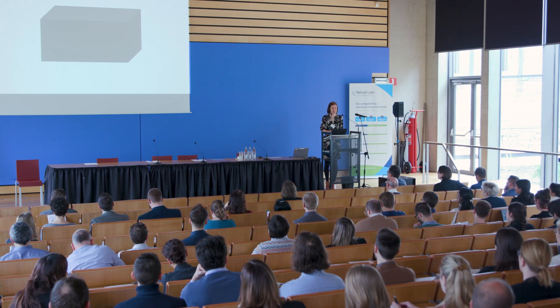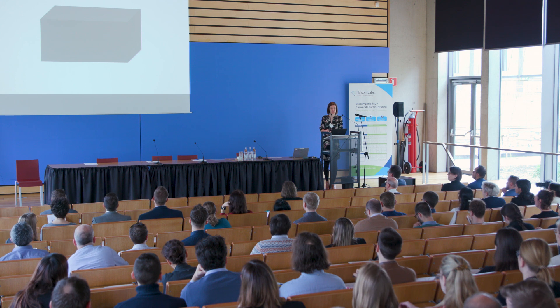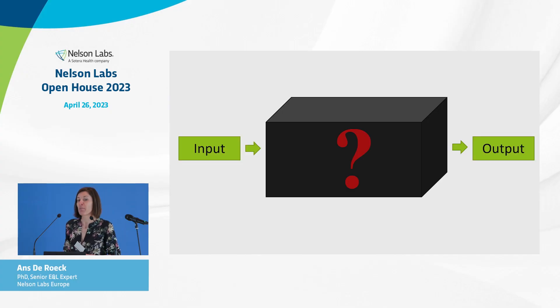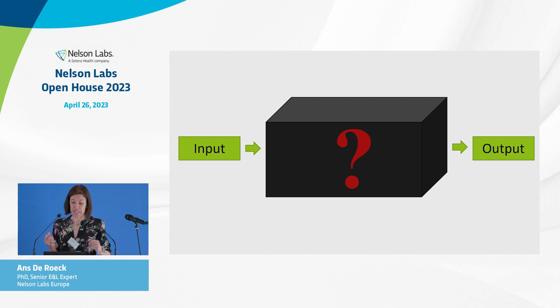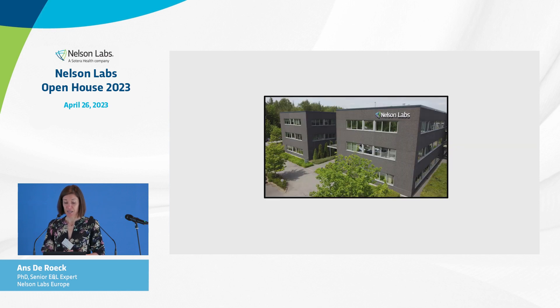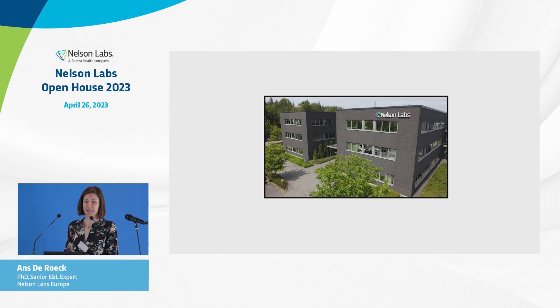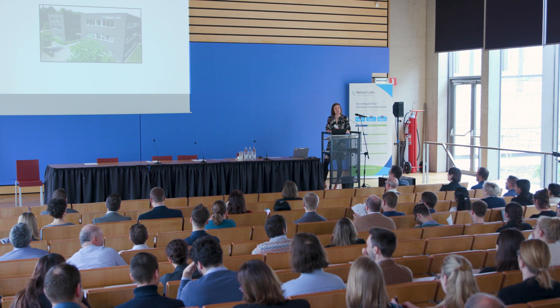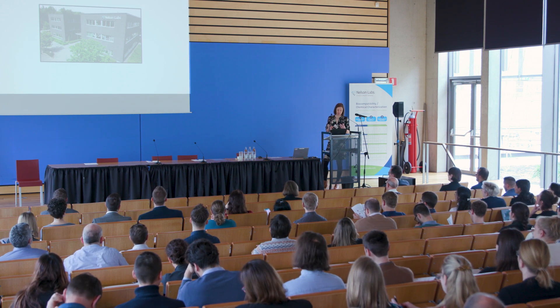Good morning everyone. I'm going to start with some questions. What is this? A black box — correct. So the characteristic of a black box is that something goes in, something comes out, but you don't know what exactly happens inside. Second question: what is this? It looks like a black box — correct — but it's a building of Nelson Labs Belgium in Europe.